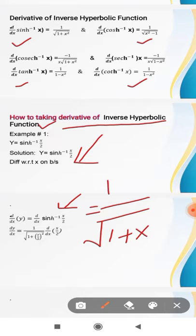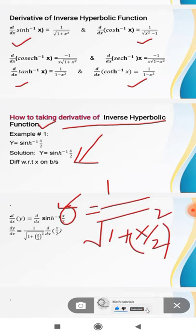In place of x square, we put x by 2 here. Because in the given function we have x by 2, so we will take the square of x by 2.